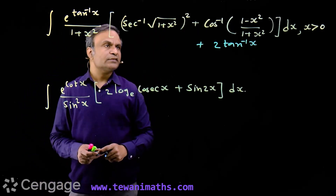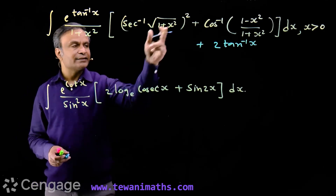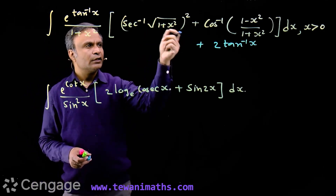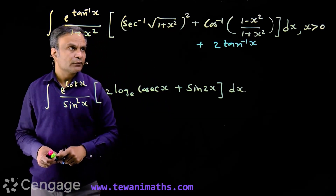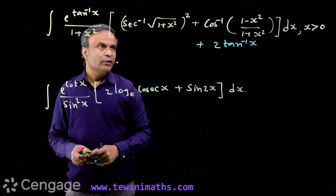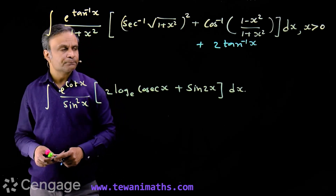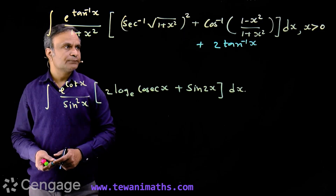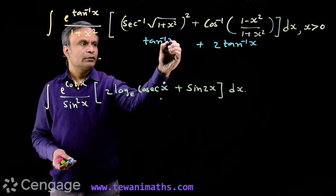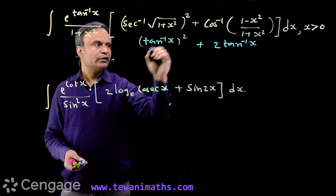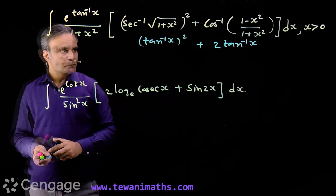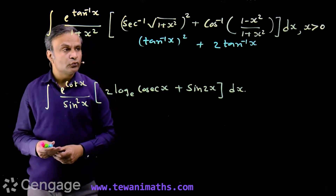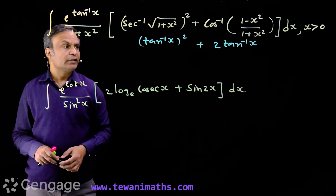Now, sec-inverse of root(1 plus x squared) is tan-inverse x. If we put x equal to tan θ, then 1 plus tan²θ is sec²θ, whose square root is sec θ. Because x is positive, root of sec²θ is sec θ, and sec-inverse of sec θ is θ, where θ is tan-inverse x. So we have the square of tan-inverse x. Now, we have e raised to tan-inverse x, and inside the bracket we have two terms, both involving tan-inverse x.